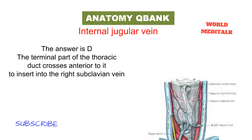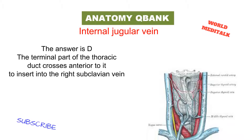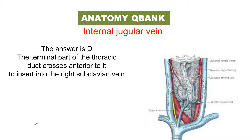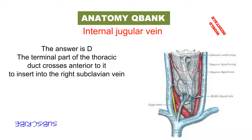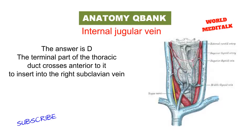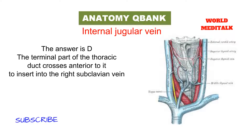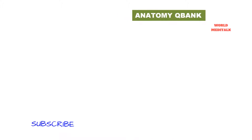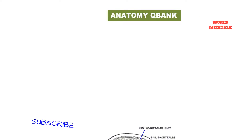Each jugular vein begins in the jugular foramen, where they are the continuation of the sigmoid sinus. It terminates at the medial end of the clavicle, where it unites with the subclavian vein. The vein lies within the carotid sheath throughout its course.